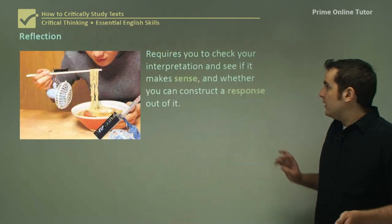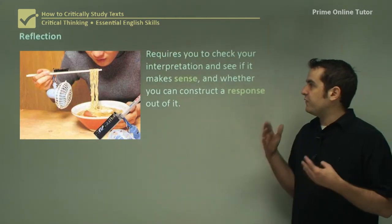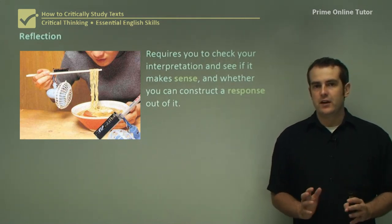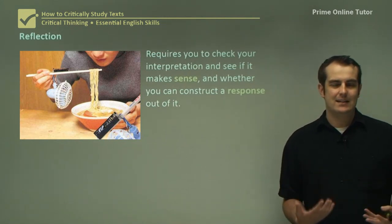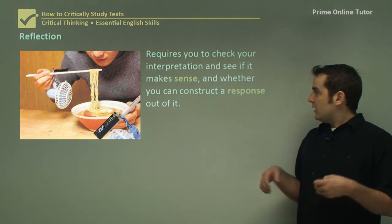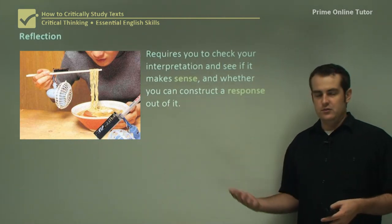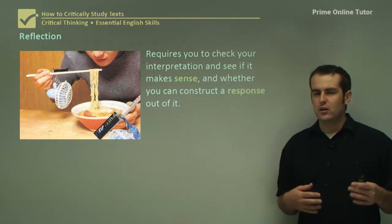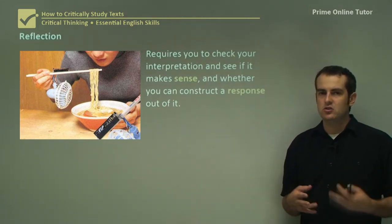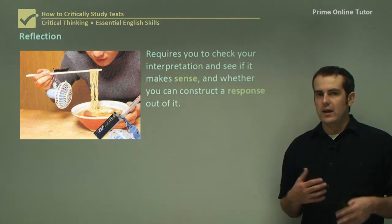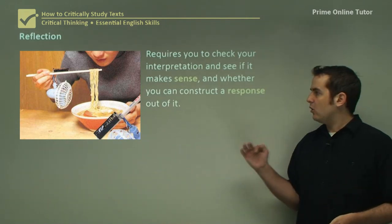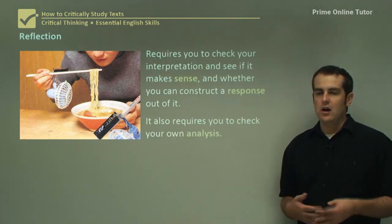Finally, the last process of critical thinking is reflection. Reflection basically allows you to see if your interpretation makes sense — it's something you do a lot when reviewing your work. You check whether you can actually construct a response out of what you've interpreted. If the question isn't really asking anything to do with danger, you can't use that interpretation. However, if it asks how the text creates suspense, you can link danger to suspense and use that argument. So reflection means checking your own analysis — going back and confirming you can use it.